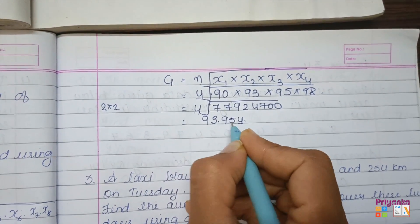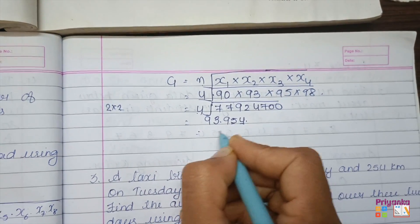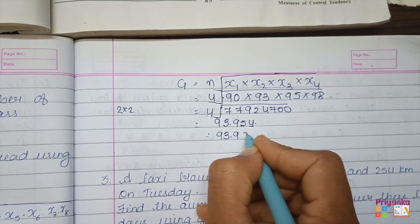Now here the square root is 4, so twice you have to press the square root, that is 2×2 = 4. So you will get the answer over here: the number is 93.954. Now this number is less, so no number of digit is going to increase. It will remain with 93.95.